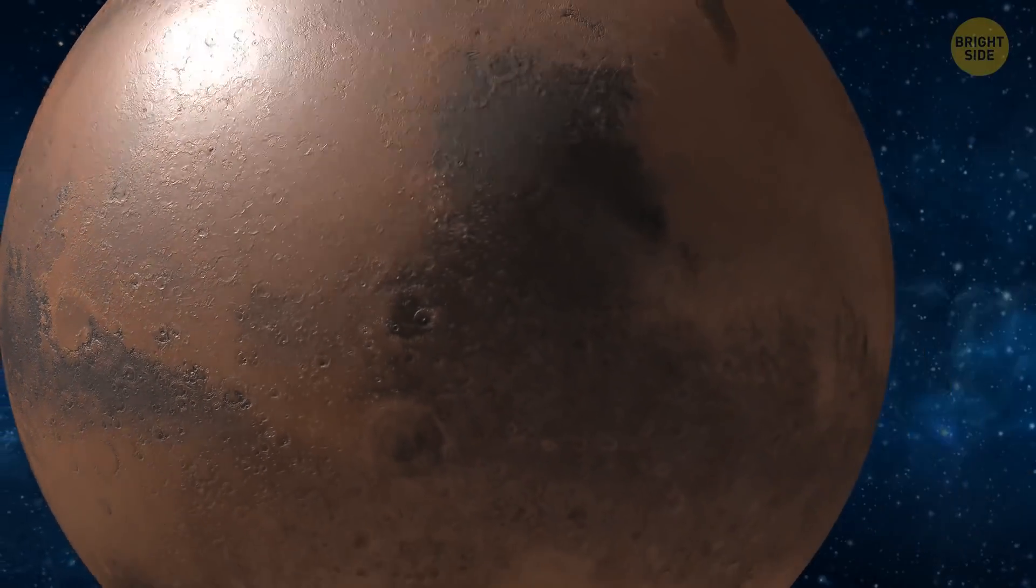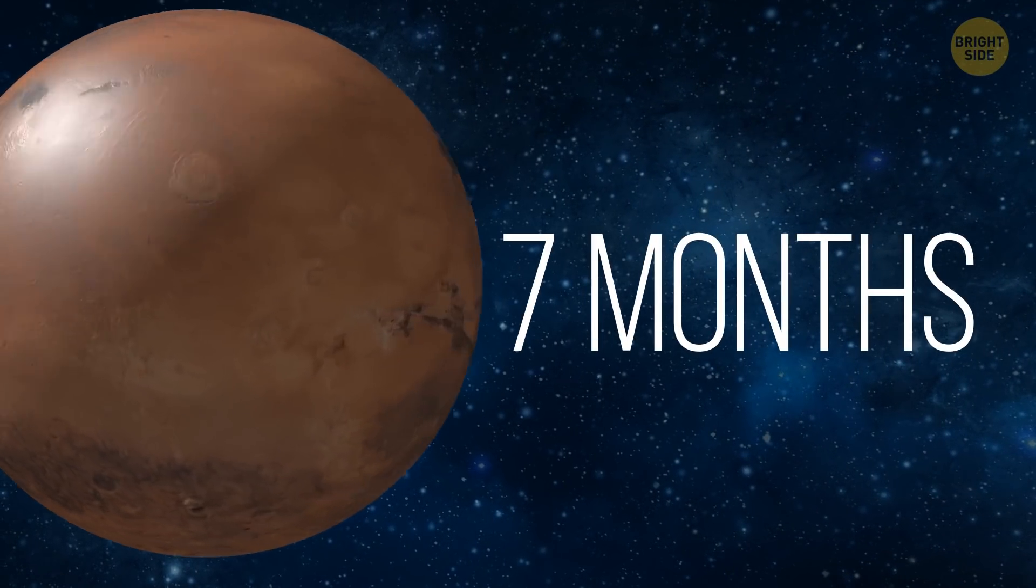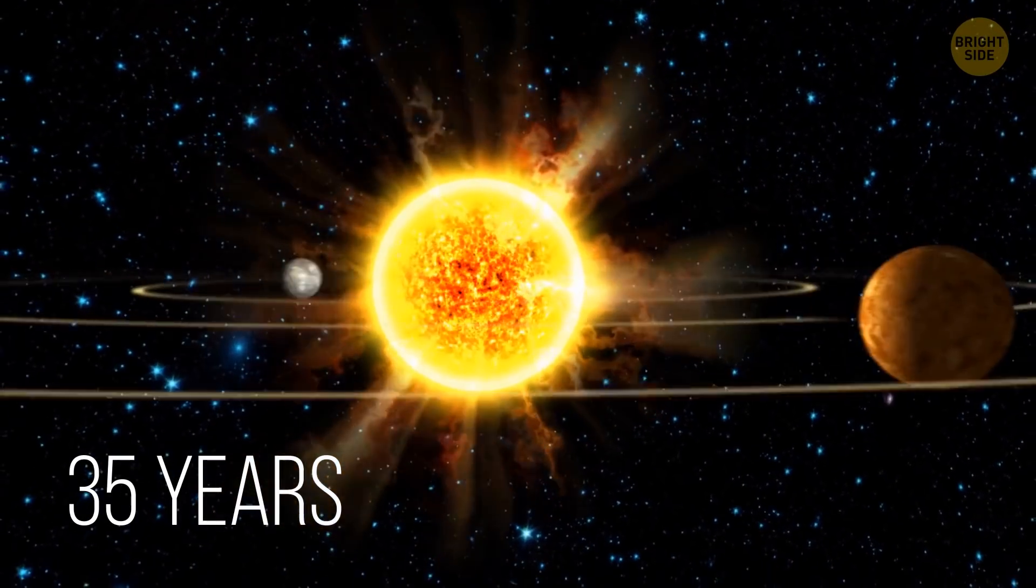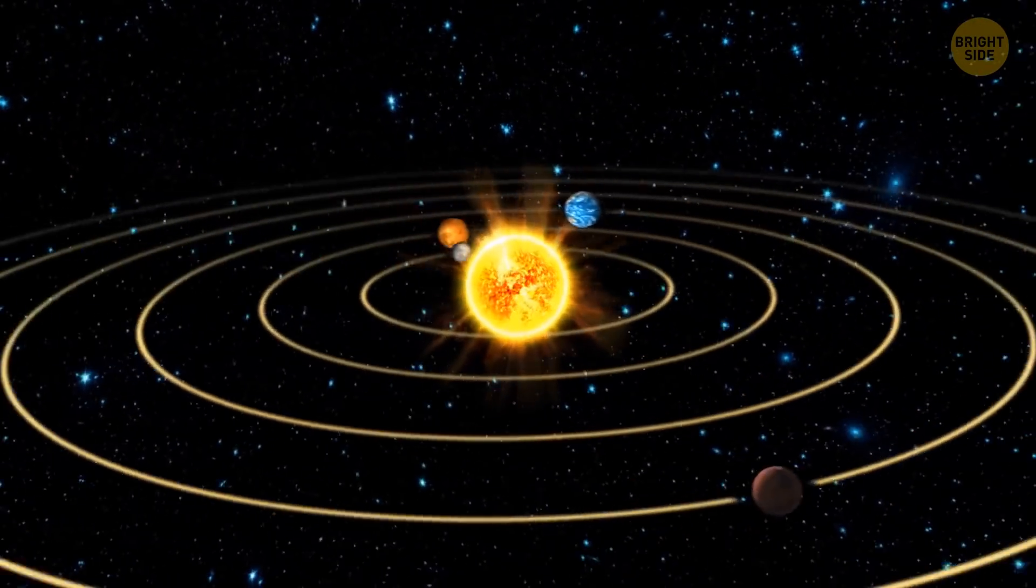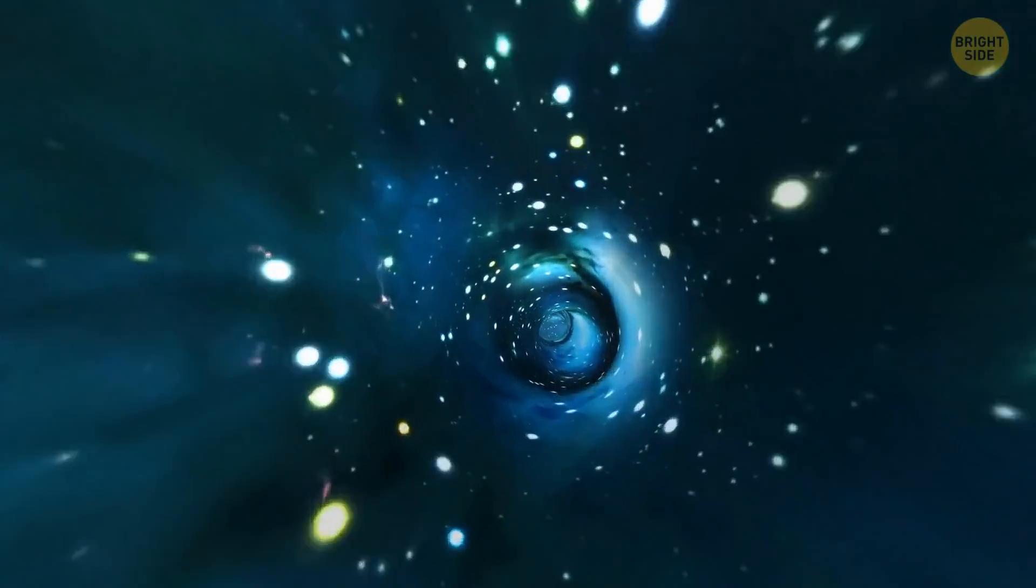A trip to a neighboring planet, like Mars, takes about 7 months. And a trip to the edge of the solar system would take about 35 years. That's how long it took the Voyager space probe, launched in 1977, to get there. But we want to travel between stars and galaxies.